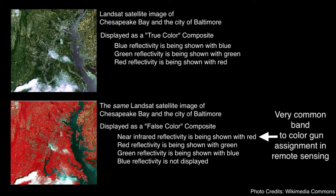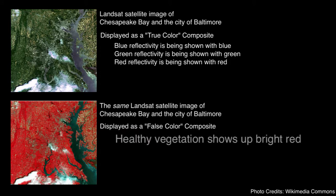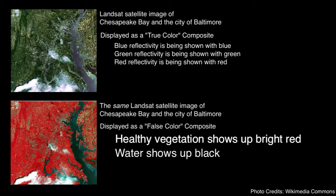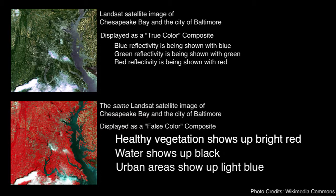It has a few different characteristics that make it so usable. Instantly, it's very easy to tell where healthy vegetation is, because with this particular band to color gun assignment, vegetation just pops — everything red is healthy vegetation. Black is water, and it's very easy to tell where water is because water shows up black in this assignment. Urban areas show up light blue. This is why this assignment is used very commonly — it makes it very easy to visually pull out vegetation, water, and urban areas.